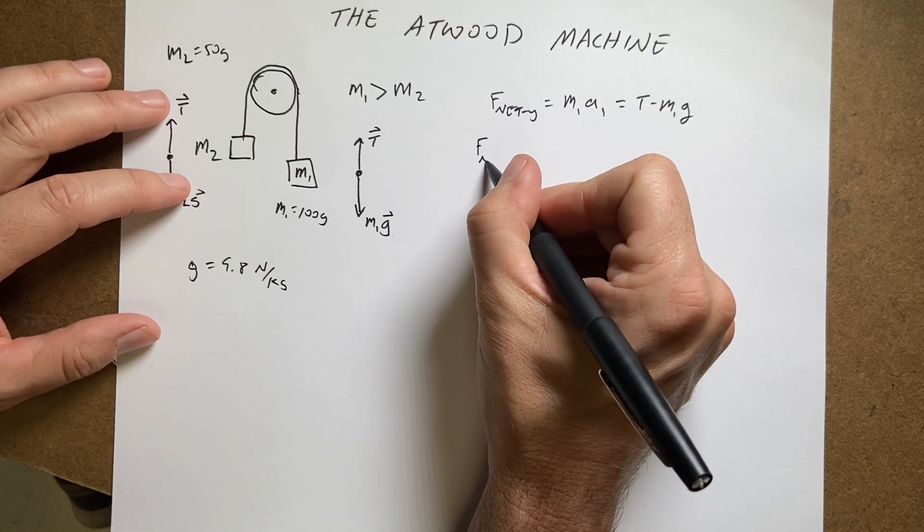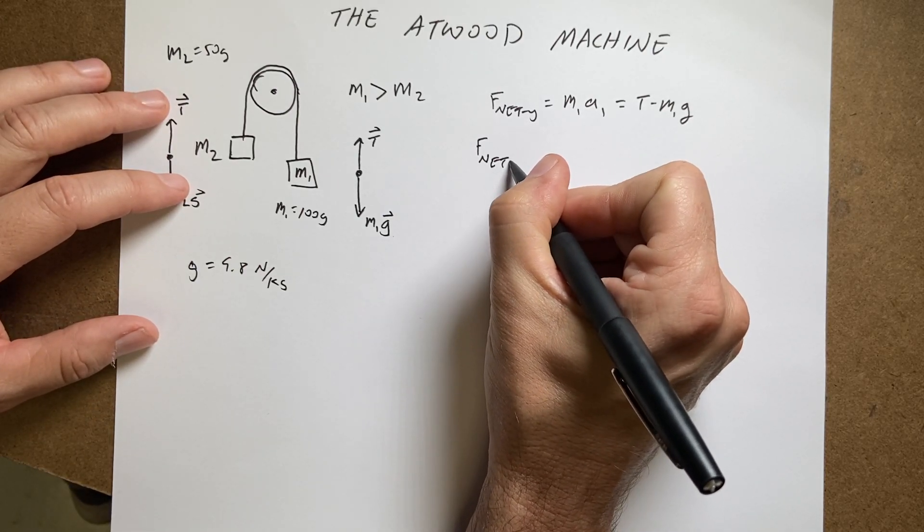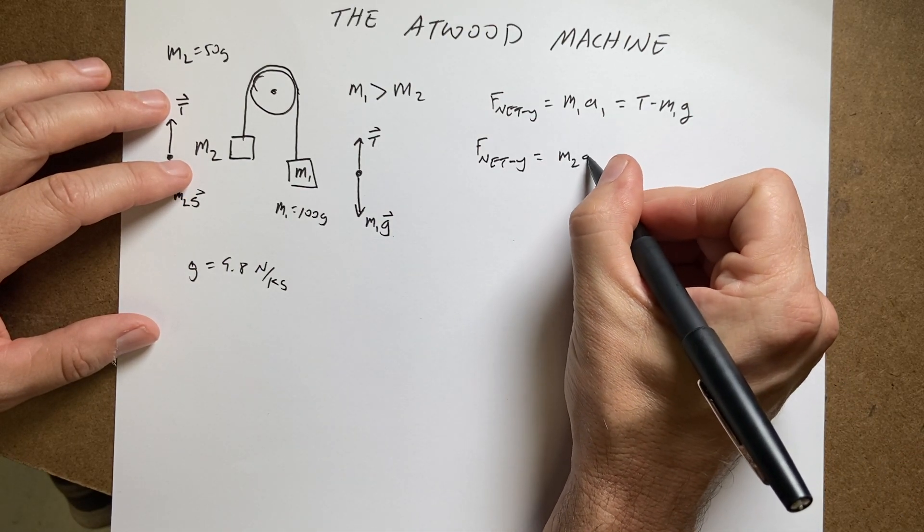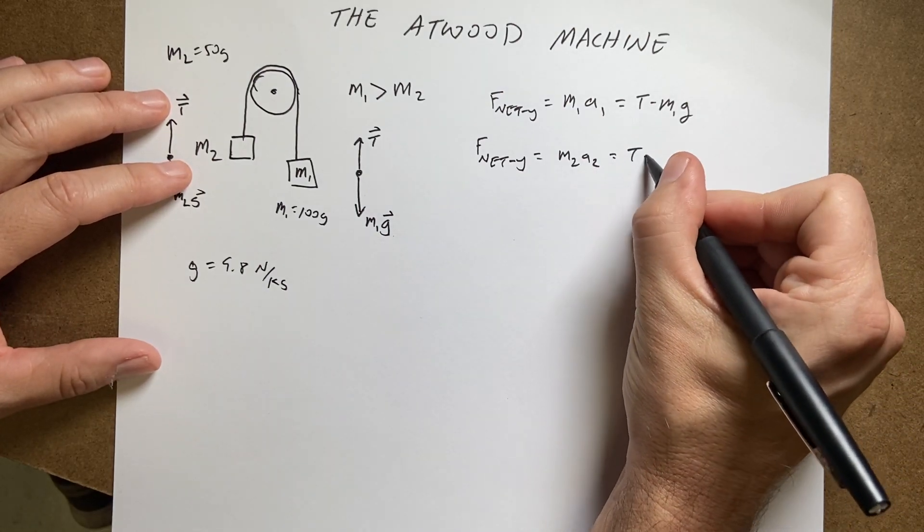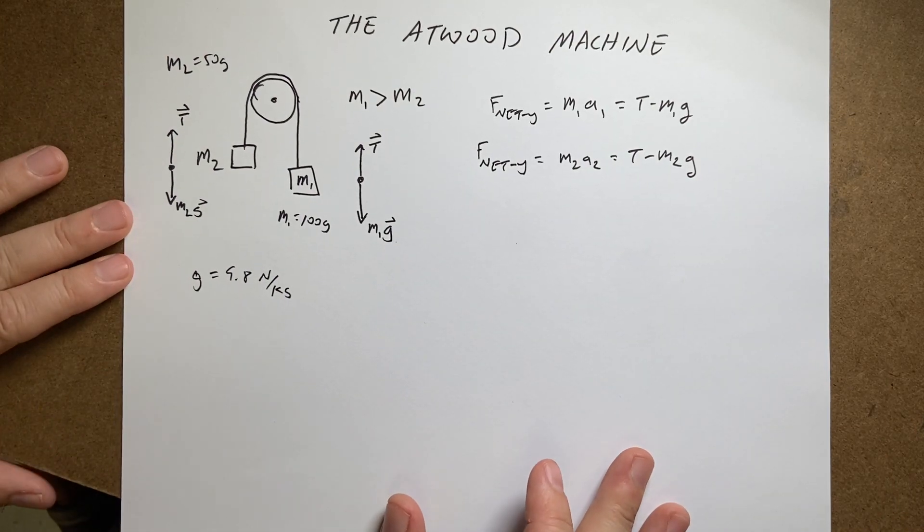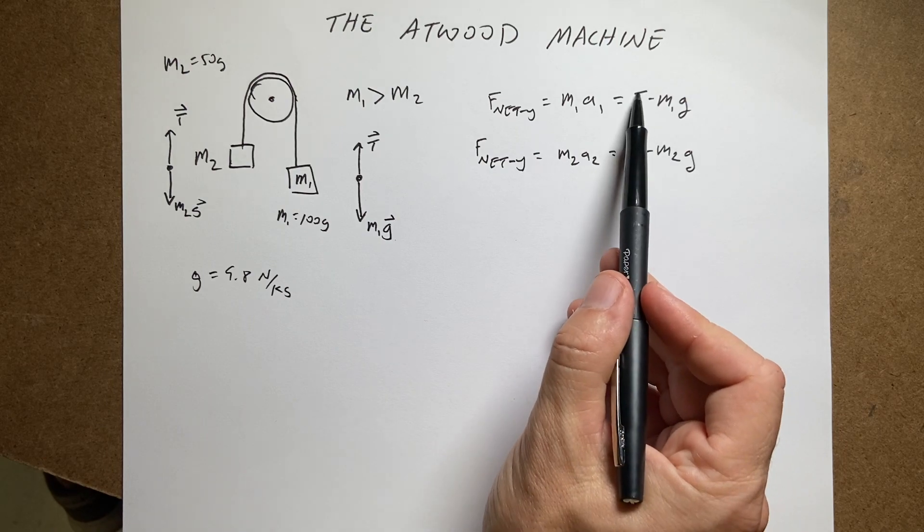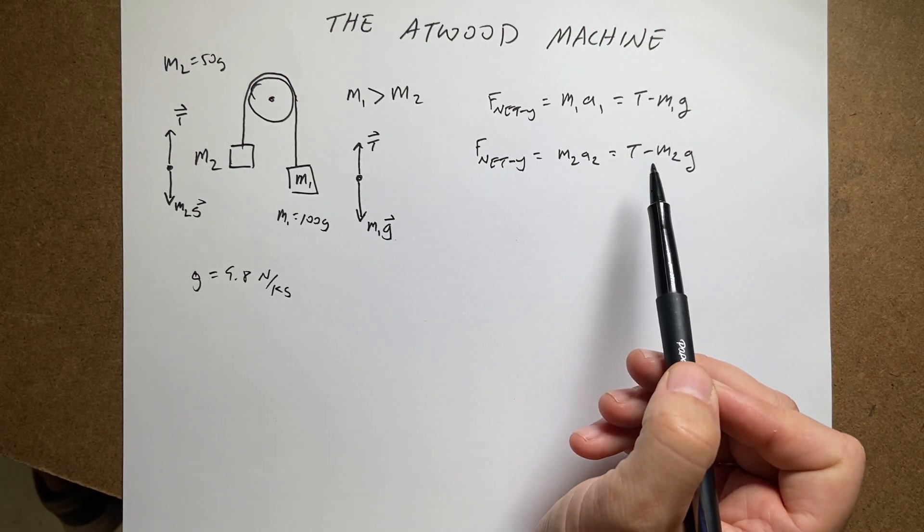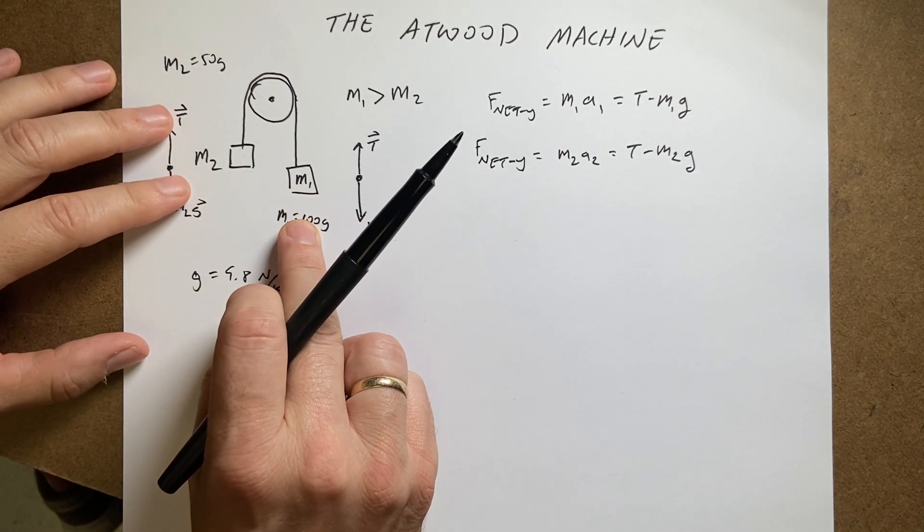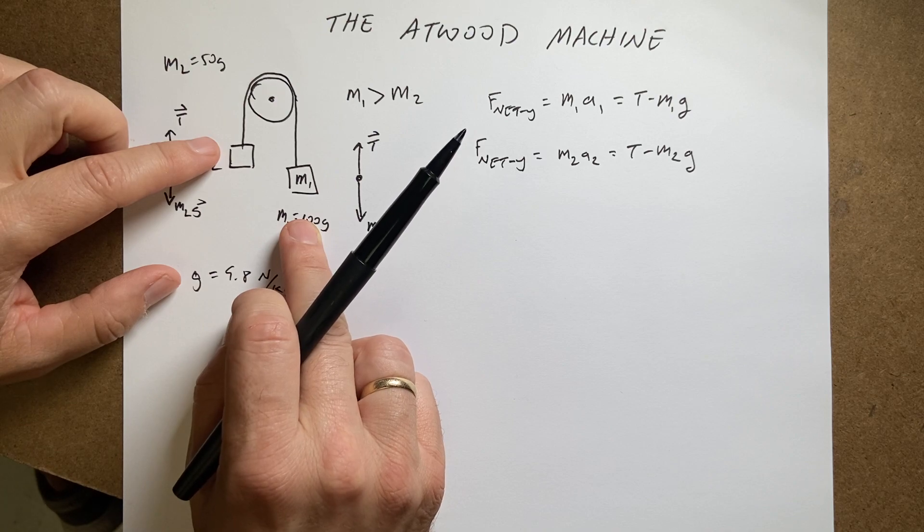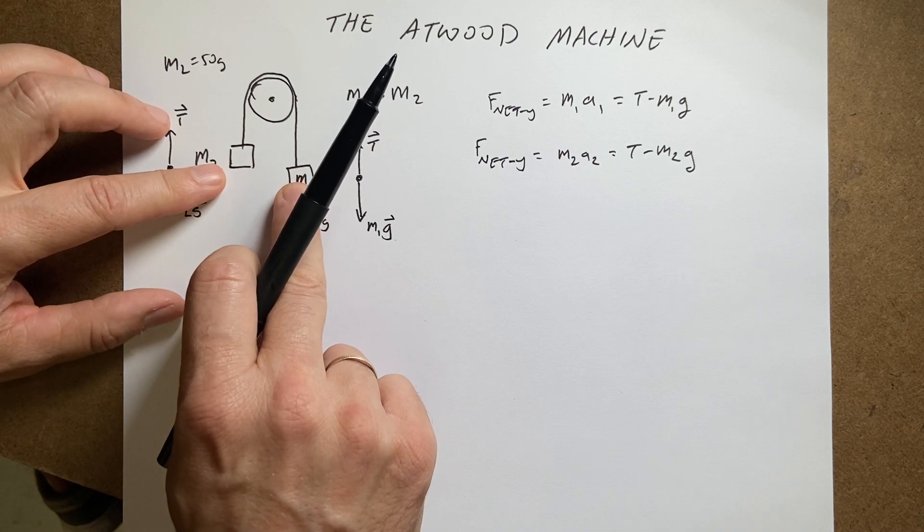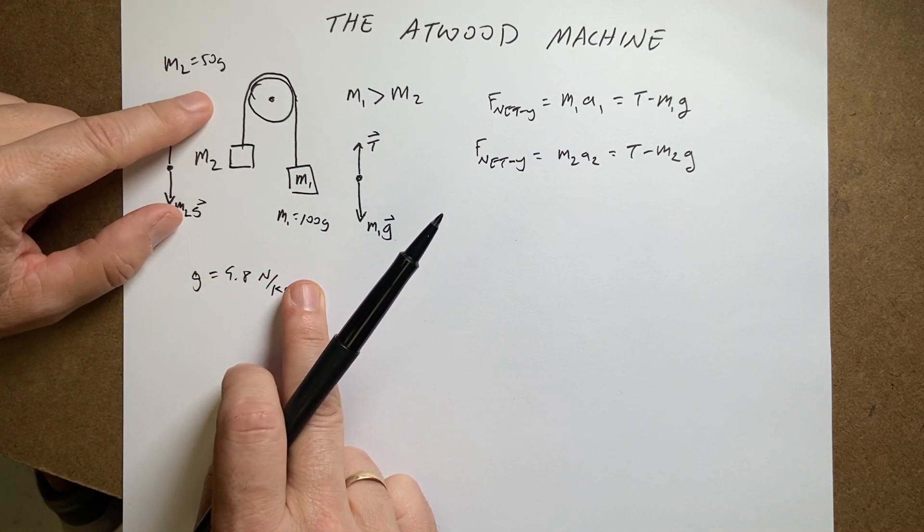Now let's do the same thing for the other force, F net y equals m2 a2 equals T minus m2 g. And so the equation looks the same. So you may think that's pointless. But there is one other thing. So I've used these two magnitudes the same. There's another trick that I have to use. Imagine that this moves down a centimeter. That has to move up a centimeter in the same amount of time.